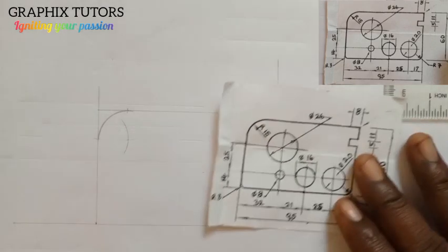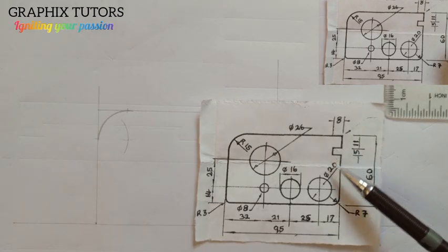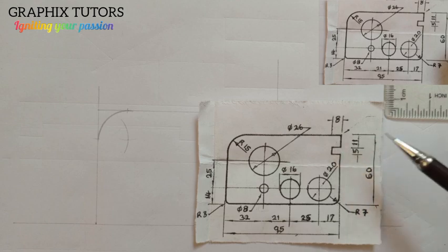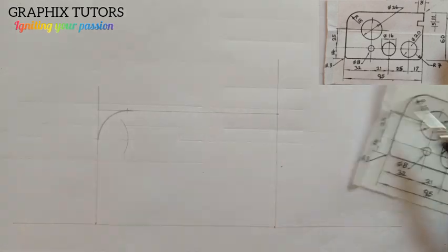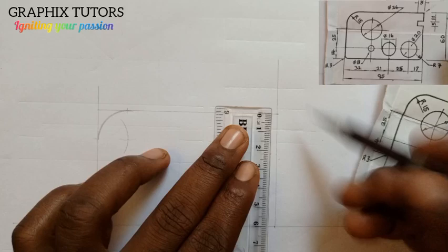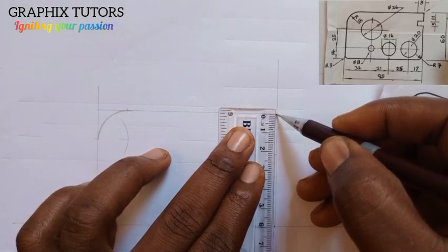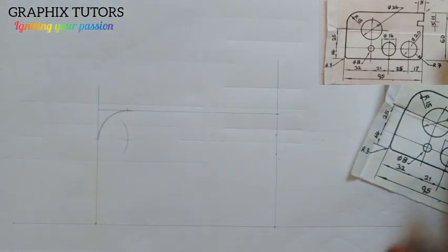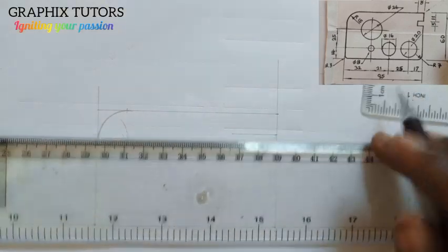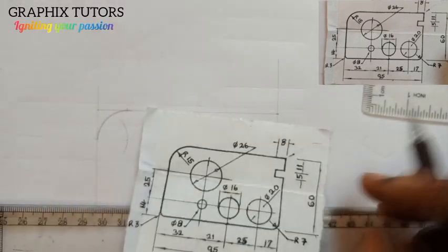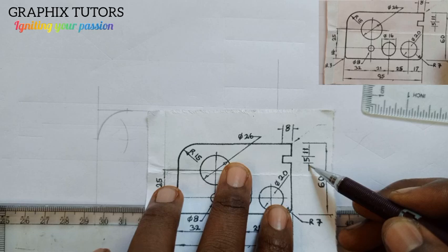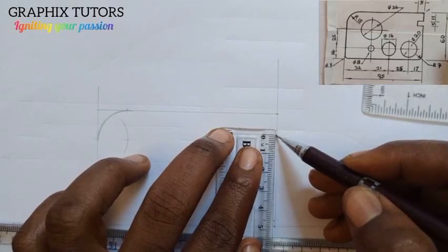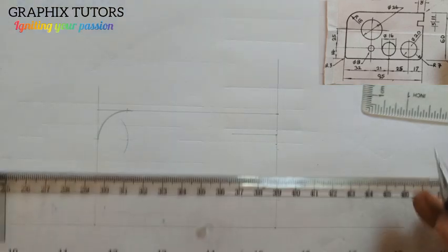The next thing is there's a cut here. The height of the cut is 5 and the depth is 8. I'll measure 11 downward first from here — from zero to this point is 11. From that point at 11, I'll draw a line inward, a faint line first. Then I'll measure another 5 downward from that level, and I'll take it inward.